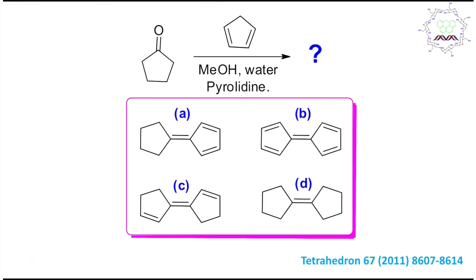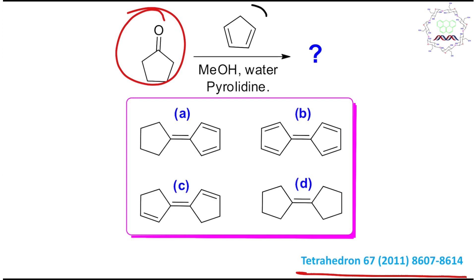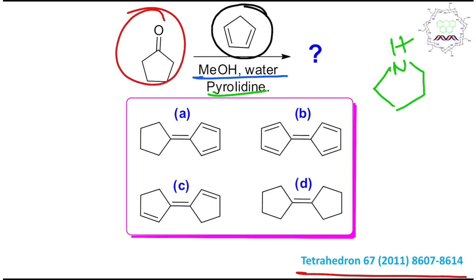Now I believe you have tried by yourself, so it's my turn to give you the right answer, and we are going to detail this. If you look at this cyclopentanone, it is actually a cyclic ketone, or more specifically a five-membered cyclic ketone. It reacts in presence of cyclopentadiene, methanol and water acting as solvent, and pyrrolidine which is acting as base — pyrrolidine being the reduced form of pyrrole, so it is a secondary amine.